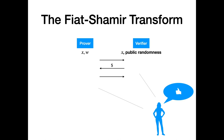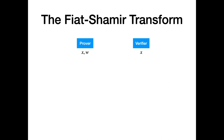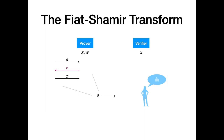I'll introduce recent work on NIZKs by describing a simple classical technique for taking a public coin interactive argument and turning it into a non-interactive one. Starting with a three-round interactive protocol, one idea is to have the prover run the protocol in their head and publish the resulting transcript to the verifier. Since the verifier's message is simply a random string, the prover can compute it on behalf of the verifier. Since the interactive verifier has no private state, the non-interactive verifier can use the public verification algorithm to check the transcript.